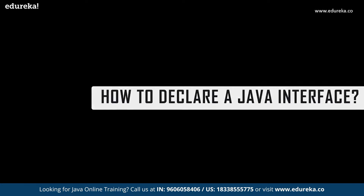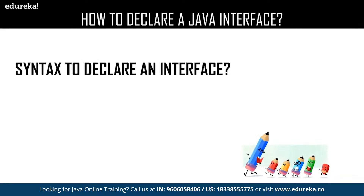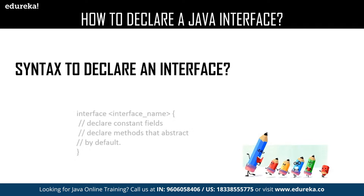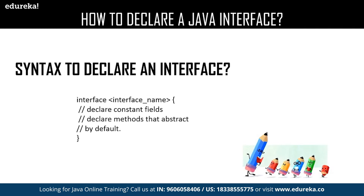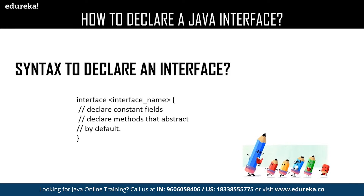Now let us have a quick revision about how to declare an interface. This is the syntax for declaring an interface where you will be using the interface keyword followed by the name of your interface. Inside the interface you can declare your methods. By default, all the methods which you declare in an interface are considered to be public.